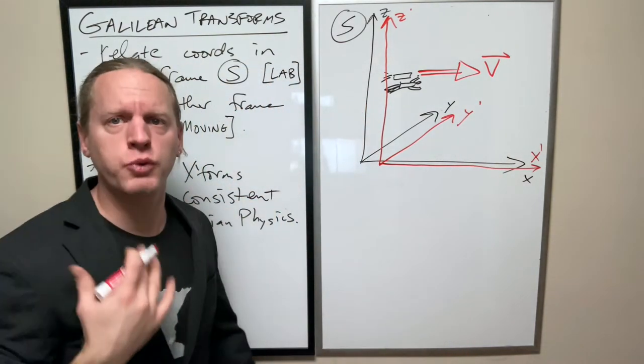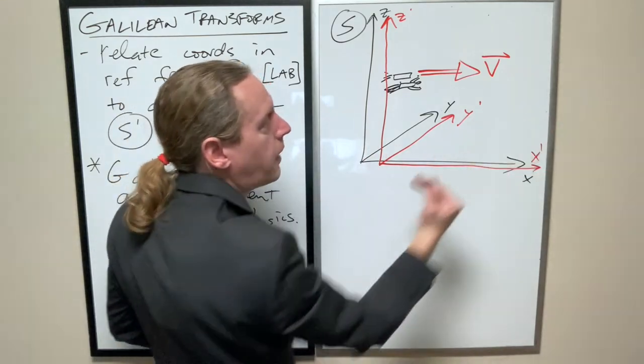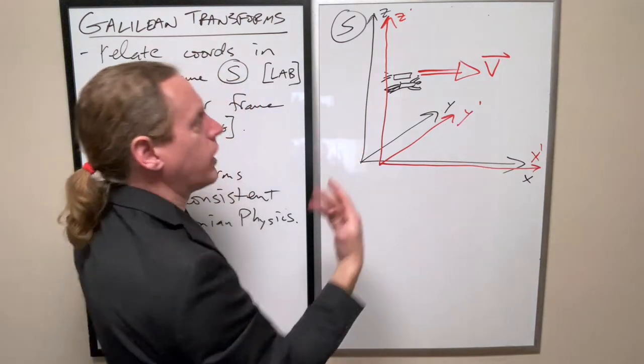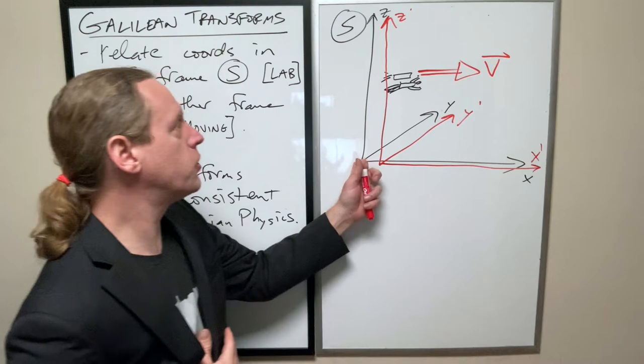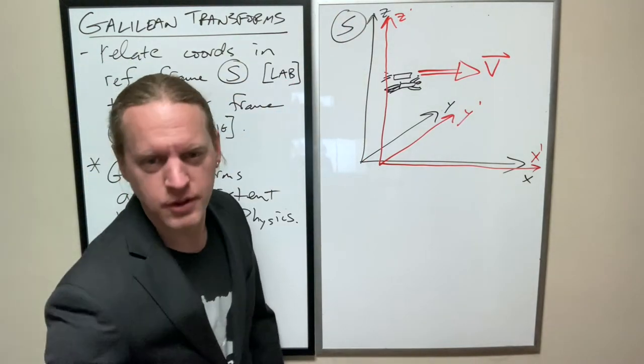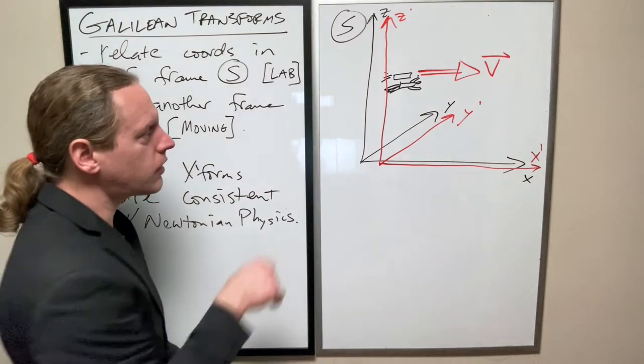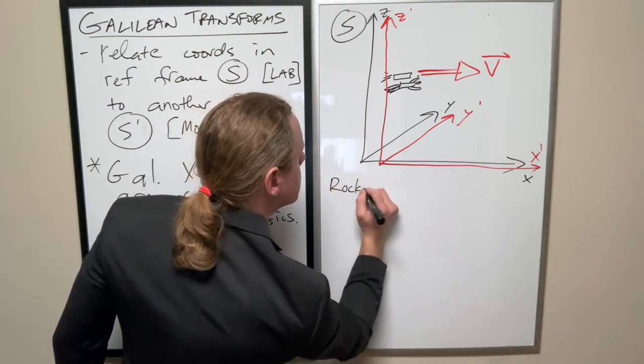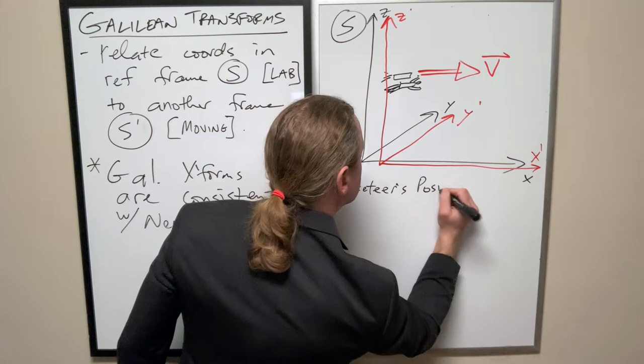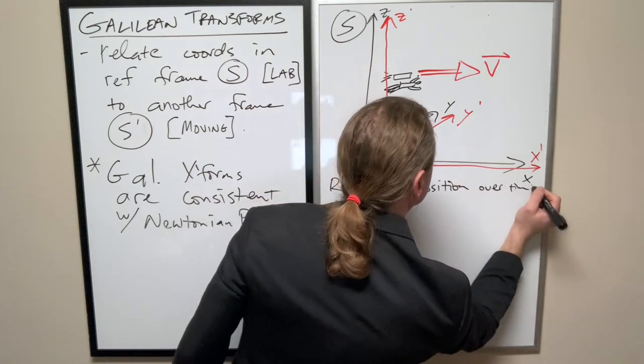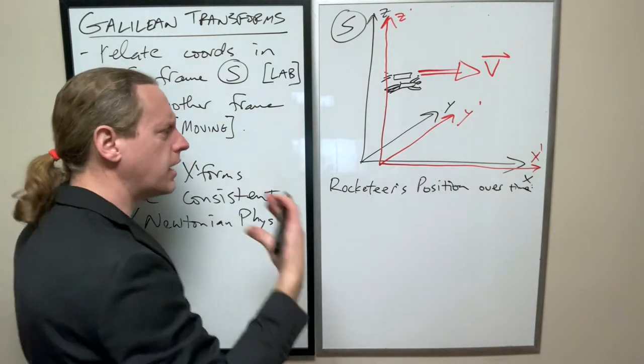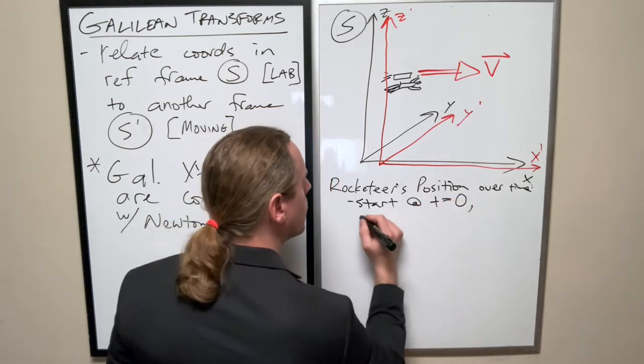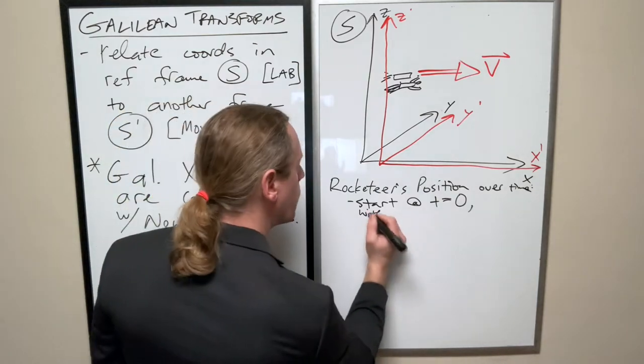The X directions are going to be aligned so that his X axis, which we're going to call X prime in red, lines up perfectly with what the lab observer views X as. His Z prime axis is lined up perfectly with Z axis and same with the Y prime axis. So the only difference is, as time goes by, his position in the X direction will change as viewed in the S axis.